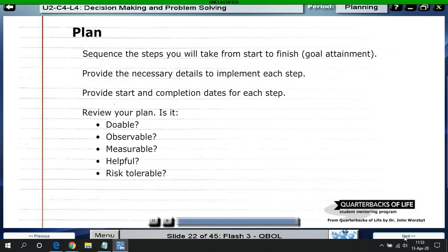Now, this last part that we see looks similar to what we remember from our SMART goals: specific, measurable, achievable, relevant, and time-bound. Here's another way to look at things. Is what the plan that you're putting together doable? Can it be observed? Can it be measured? Is it helpful? And then risk tolerable means is the risk too high or is it acceptable?